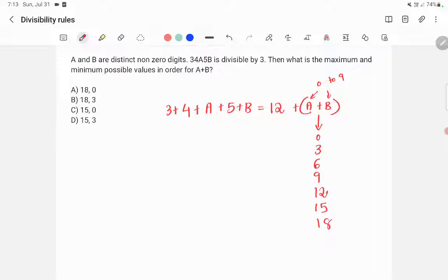So you will be having a tendency to write 0 as the minimum value and 18 as the maximum value. But that is not the answer. Why?